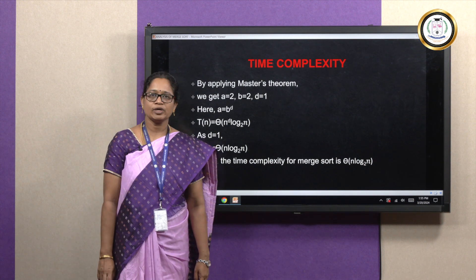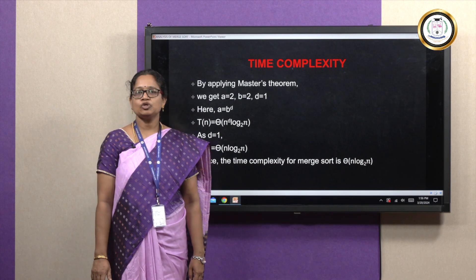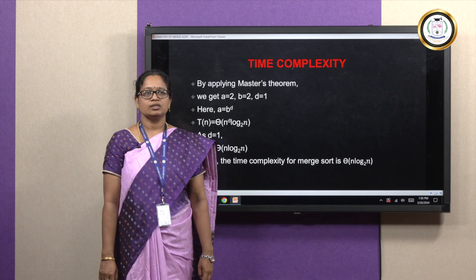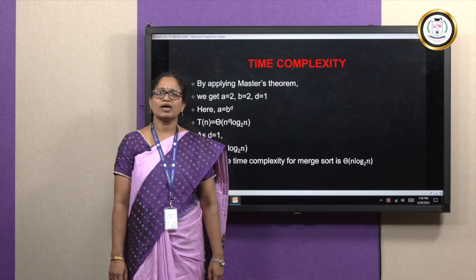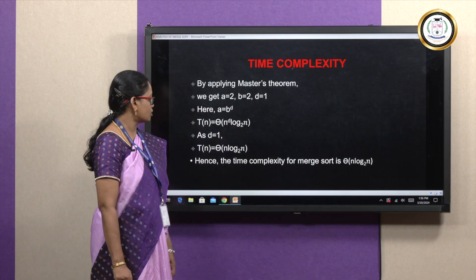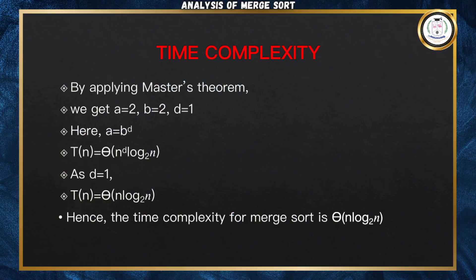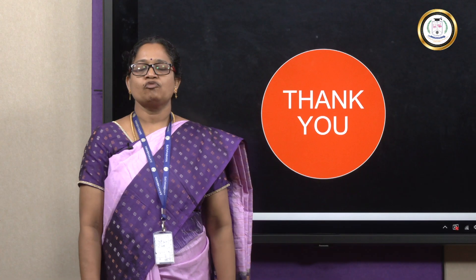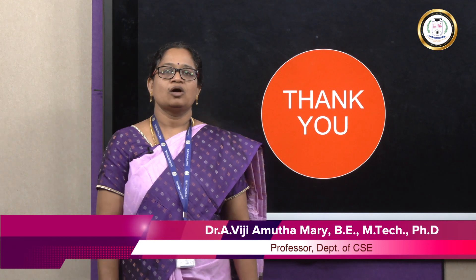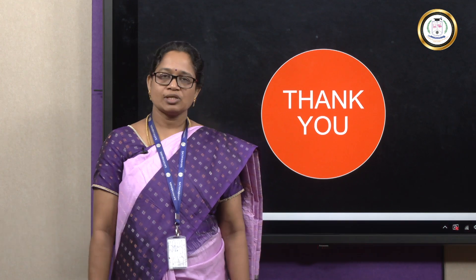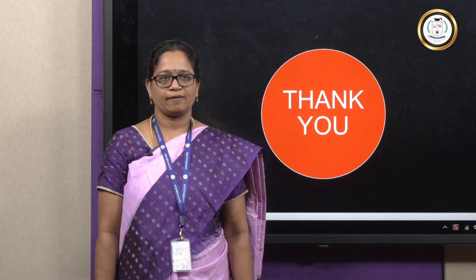Case 2 is satisfied here. The solution for case 2 is Theta of n to the power D times log n. Here the value of D is 1, so we write the solution as Theta(n log n). This is the time complexity of merge sort. For merge sort, the worst case, best case, and average case — all the time complexities are the same, which is n log n.